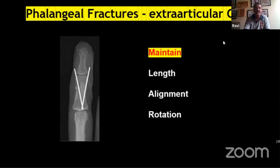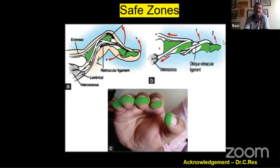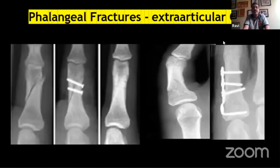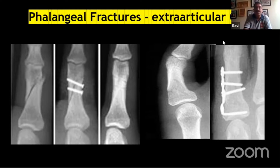For extra-articular fractures where early mobilization is needed in a high-demand patient, internal fixation may be required for unstable fractures. This can be achieved using interfragmentary screws or a small plate from a hand set. The incision usually employed is the mid-axial incision — landmarks are obtained by flexing the finger and marking the apex of the skin creases with the PIP and DIP joints completely flexed; when the finger is extended, this gives a straight line for the incision.